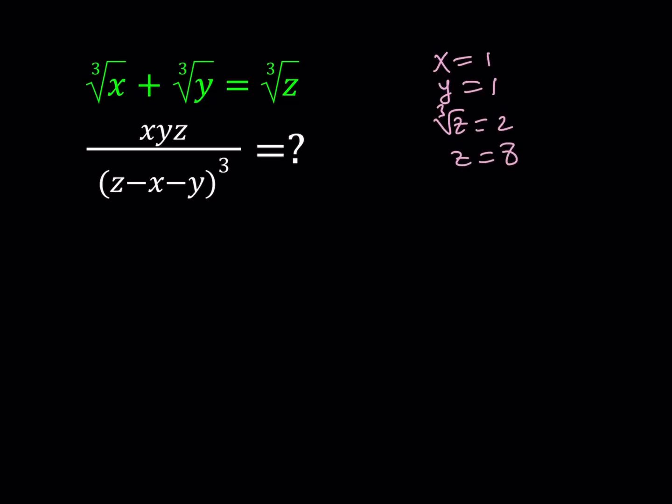So 1, 1, 8 is actually a solution to this equation. There are obviously infinitely many solutions. Negatives work as well. And you can test out many different values. But I'm just going to go ahead and plug these in and see what happens. If you replace x, y, z with those values, you're going to get 1 times 1 times 8 divided by (z-x-y) cubed. This is going to be 8 divided by 6 cubed. And we can simplify it. Notice that 8 can be written as 2 cubed. So this is going to be (1/3) to the third power. And that equals 1 over 27.